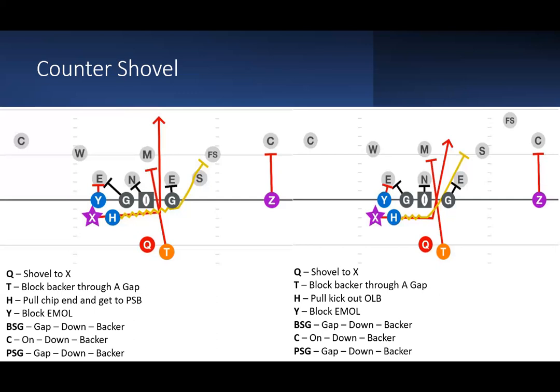The Y again is going to block the EMOL, the backside guard is going to go gap down backer, and then the center is going to go on down backer. And then because we want to run this A gap, the playside guard against a three-man front is actually going to kick out that end rather than go into his inside gap first. So if he sees something out there and he knows that the H is supposed to come up the middle, he's going to do that. I know it sounds a little bit complex, but it's really simple.